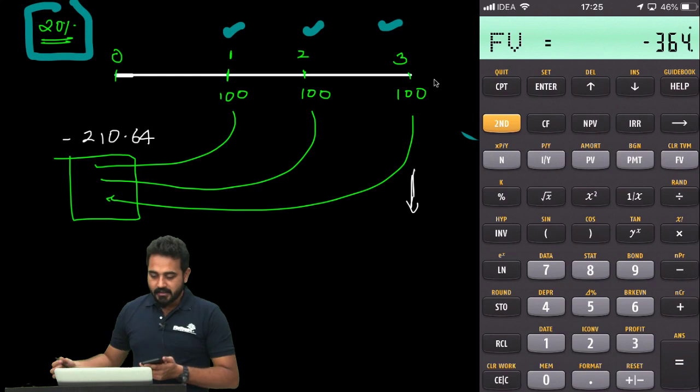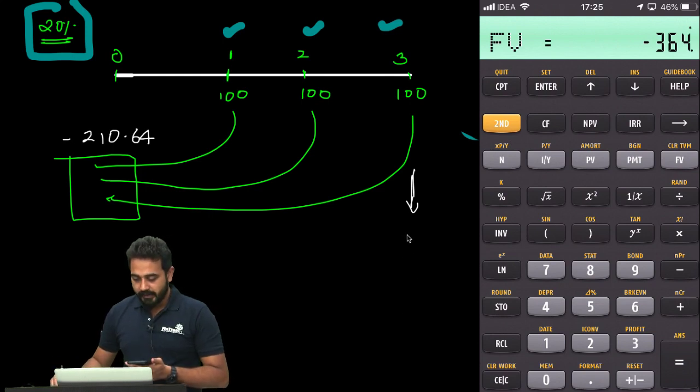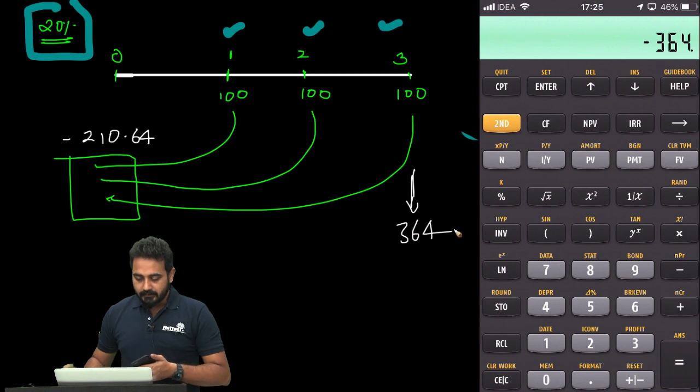Computing future value, you get $364, which is the correct answer in this situation. So this is how you deal with annuities on the Texas calculator.